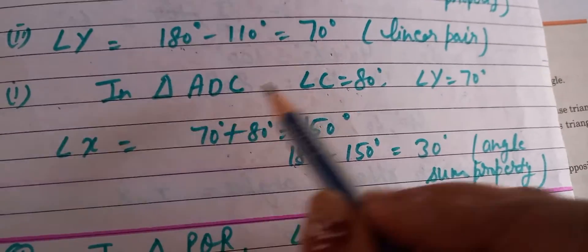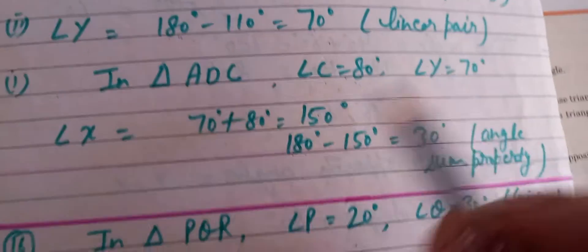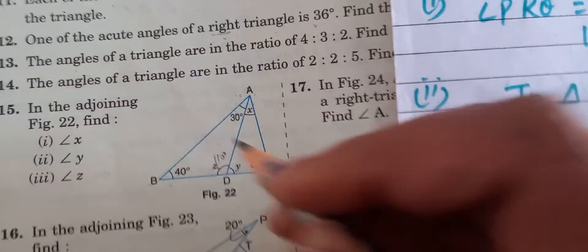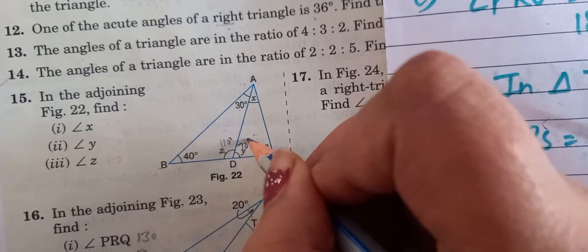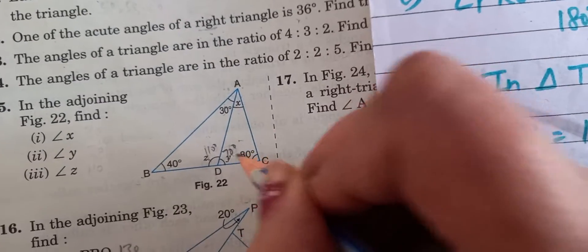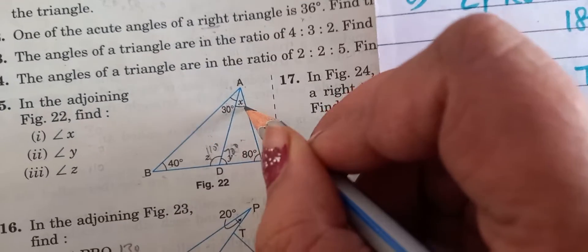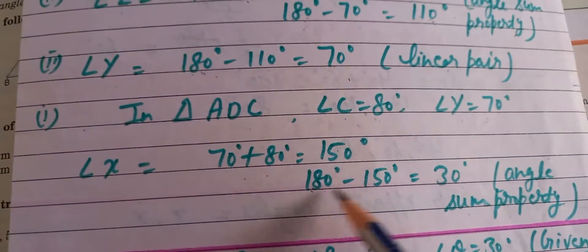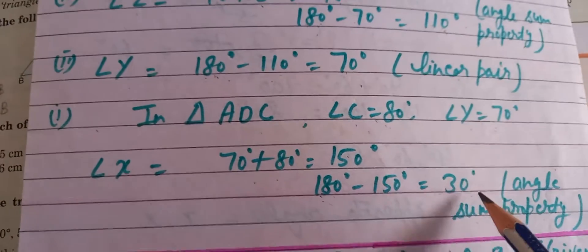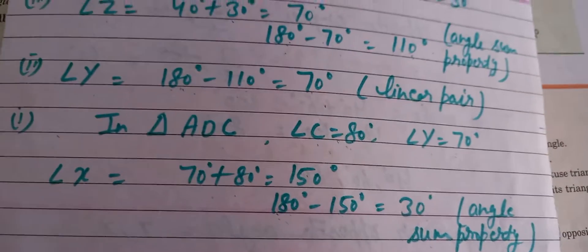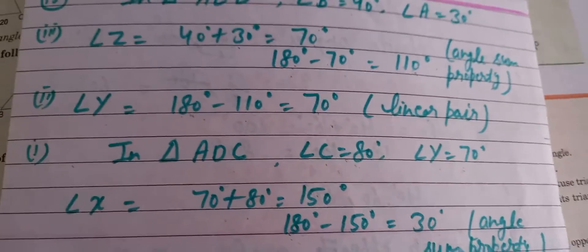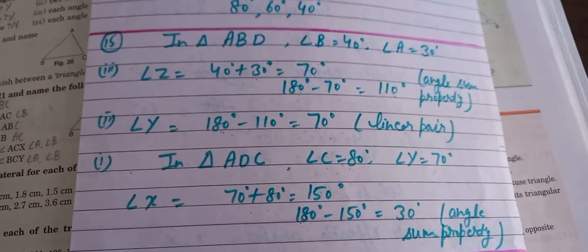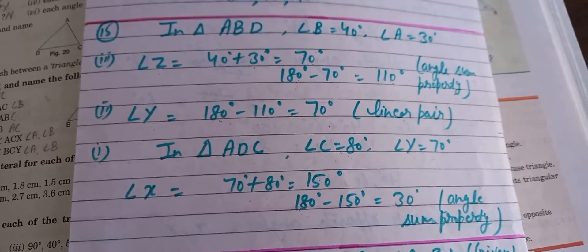Now taking triangle ADC: one angle is 80° and we found Y = 70°. Adding 70 + 80 = 150, then subtracting from 180 gives angle X = 30°. This uses the angle sum property. You have to complete up to question number 15. Thank you.